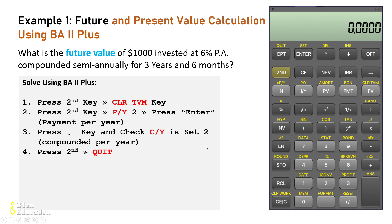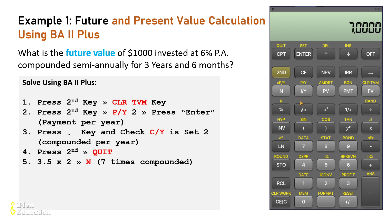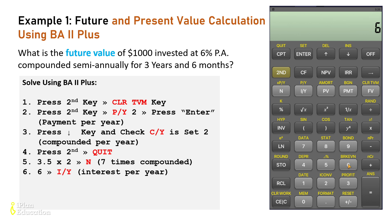Now enter the remaining values. For N, it is three and a half years multiplied by two, so that means seven times it is being compounded. Press seven and then N. Then enter the interest rate — it is six percent per year — so press six and then I/Y.